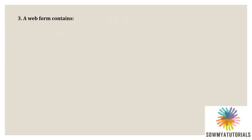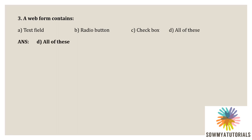A web form contains what? Option A: text field. Option B: radio button. Option C: check box. Option D: all of these. The correct option is all of these, because a web form contains all of these — text field, radio button, check box, menu box, or anything else.